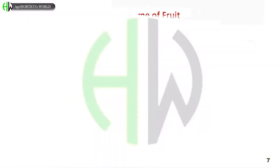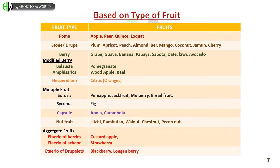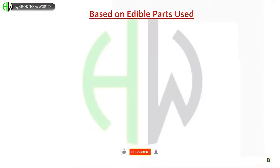Classification based on type of fruit: pome type is present in apple, pear, quince, and loquat. Stone or drupe type is found in plum, apricot, peach, almond, pear, mango, coconut, jamun, and cherry. Berry type is found in grape, guava, banana, papaya, sapota, date, kiwi, and avocado. Modified berry: balausta in pomegranate, amphisarca in wood apple, and hesperidium in citrus species. Multiple fruit types: sorosis in pineapple, jackfruit, and mulberry. Syconus in fig, capsule in carambola, and loculicidal nut type in litchi.